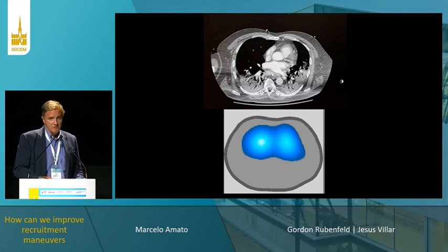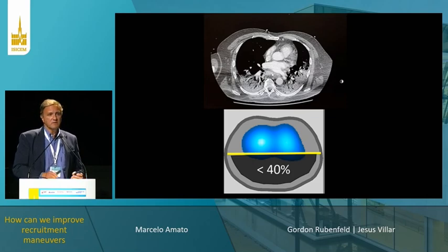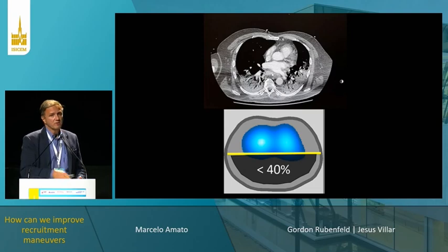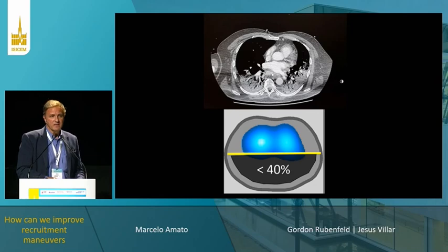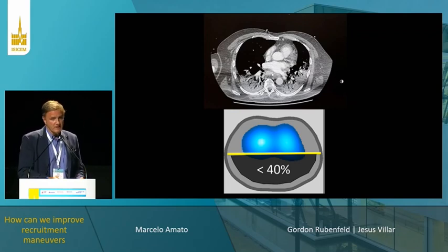This is very useful at the bedside. If you see a patient with less than 40% ventilation in the dorsal region, this is a signal that the patient should be submitted to a recruiting maneuver. If unsuccessful and you cannot increase this value to at least 50%, this patient has to go to prone or lateral positioning.